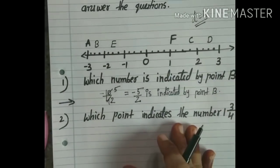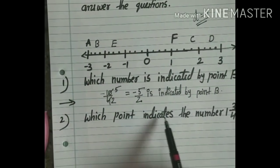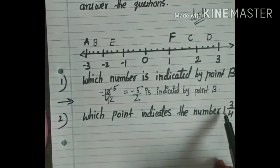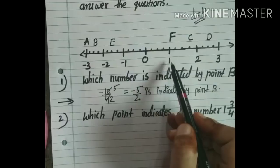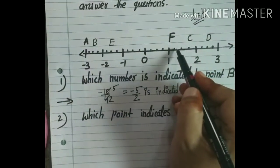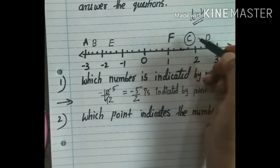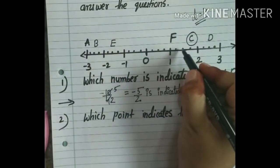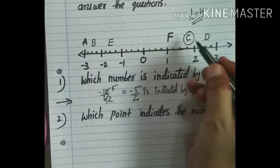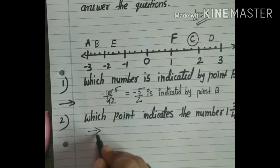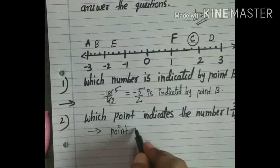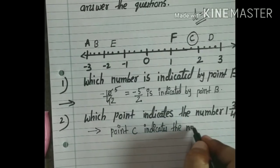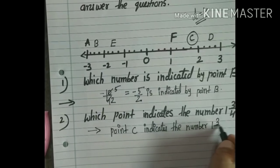Question number 2: which point indicates the number 1 and 3 upon 4? This is a positive number, so come to the right hand side. After 1 unit, count 3 more points: 1, 2, 3. Which point indicates that number? Point C. So point C indicates the number 1 and 3 upon 4.